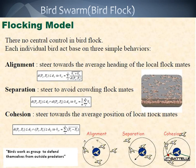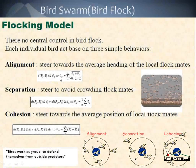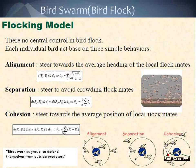When we are concerned about flocking models, there are mainly three separate things. The first one is alignment, and separation, and cohesion. From all these can be calculated by predefined algorithms. Birds work as a group to defend themselves from outside predators.